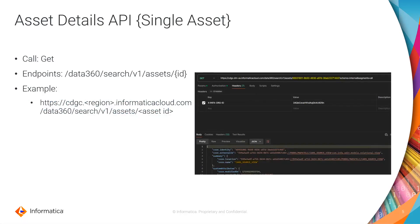The asset details API is a GET call and the endpoint is data360/search/v1/asset. You provide the asset ID in the headers of the API. The asset ID can be obtained from the Data Governance and Catalog UI, which I'll show in the demo. For example, an asset ID representing a view named cars_source_view will return all the details you see in the Data Governance and Catalog UI — business name, tags, business description, technical description, custom attributes, lineage information, and relationships.